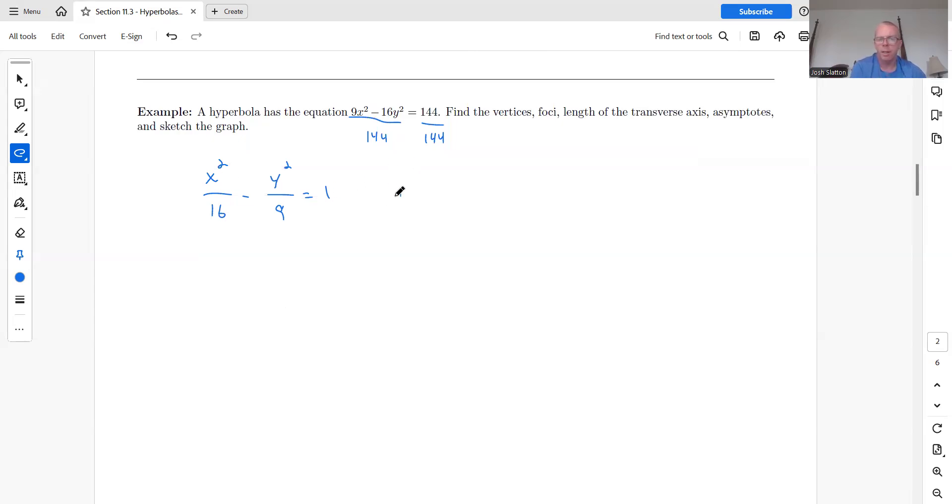So that tells us that a squared is 16, which means that a is going to be 4 or plus or minus 4, I guess we could say. B squared is 9, and so b is going to be plus or minus 3. And then we can find c squared is going to be a squared plus b squared. And so we get that c squared is 25. And so our focus points will be plus or minus 5 comma 0.